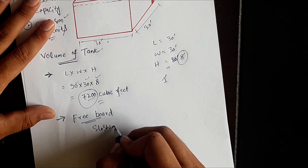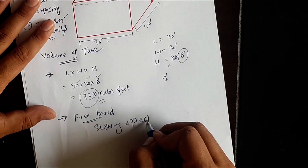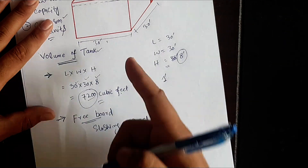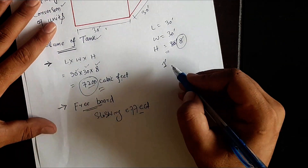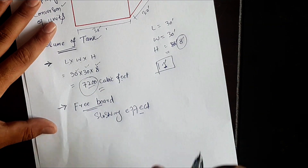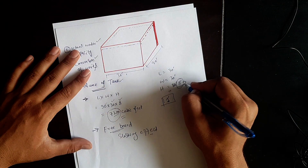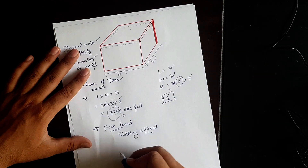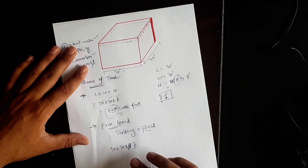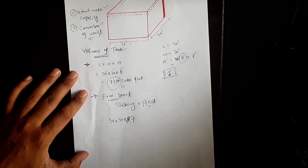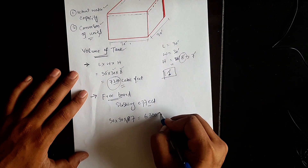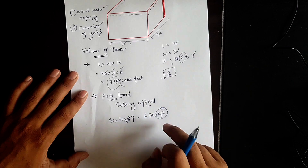That free space is for the sloshing effect — I will explain sloshing effect in another video. So we are going to leave a space of 1 foot as freeboard. The actual height will therefore be 7 feet instead of 8 feet, and the volume will be calculated as 30 × 30 × 7 feet.